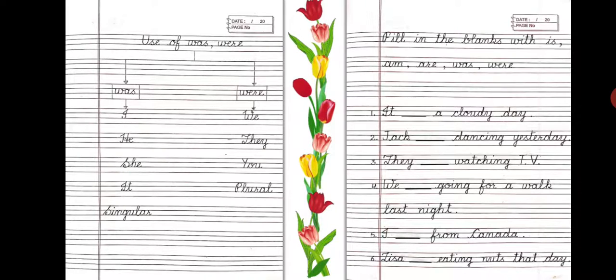Was is used with the words like I, he, she, it, and with singular nouns. On the other hand, were is used with the words like we, they, you, and with plural nouns.